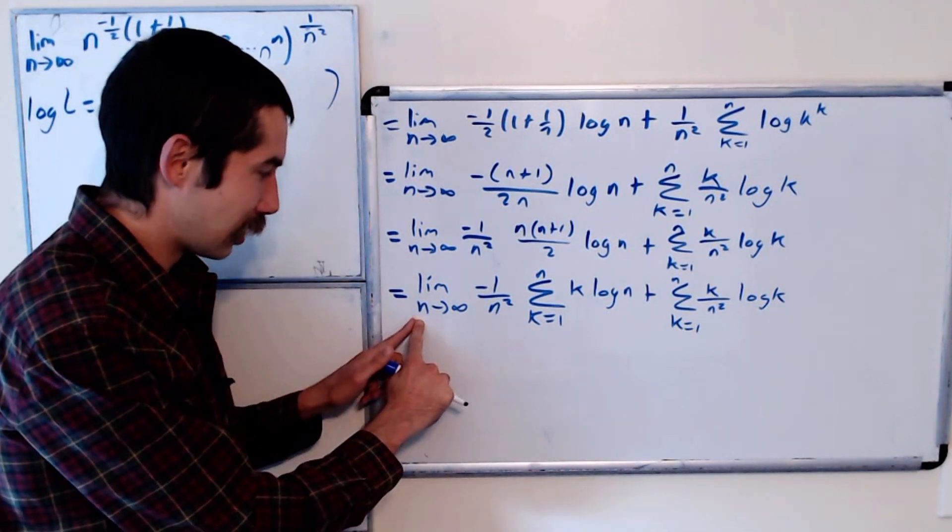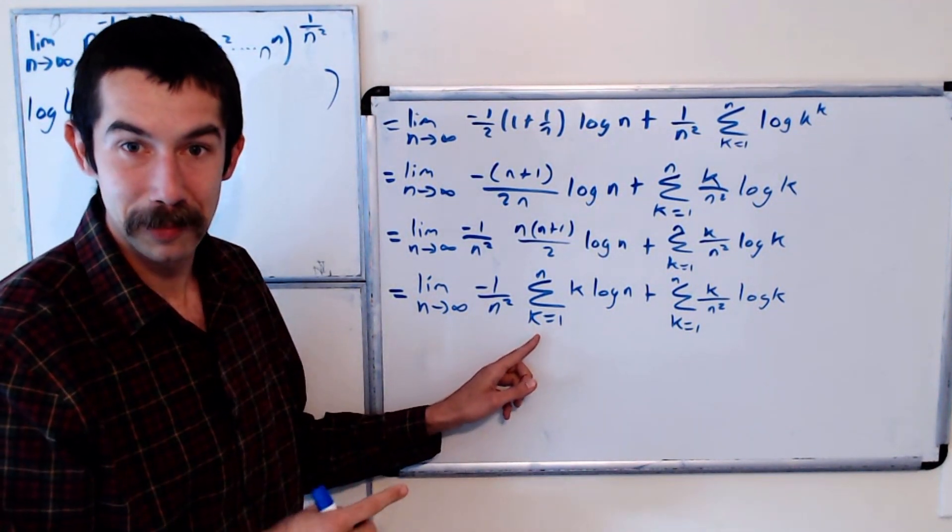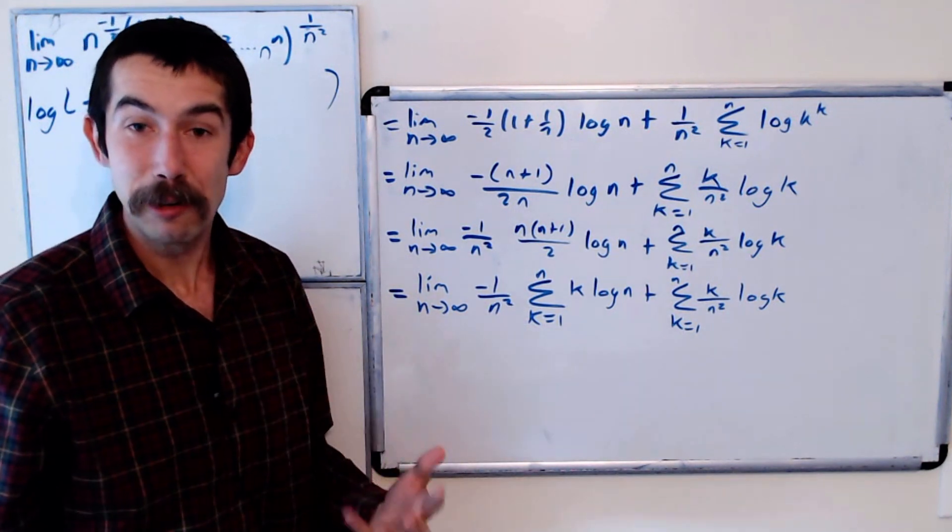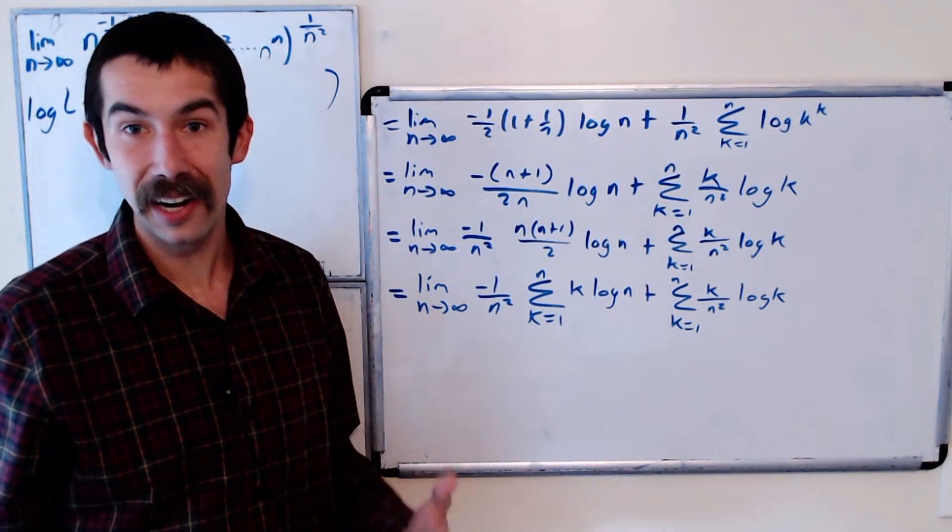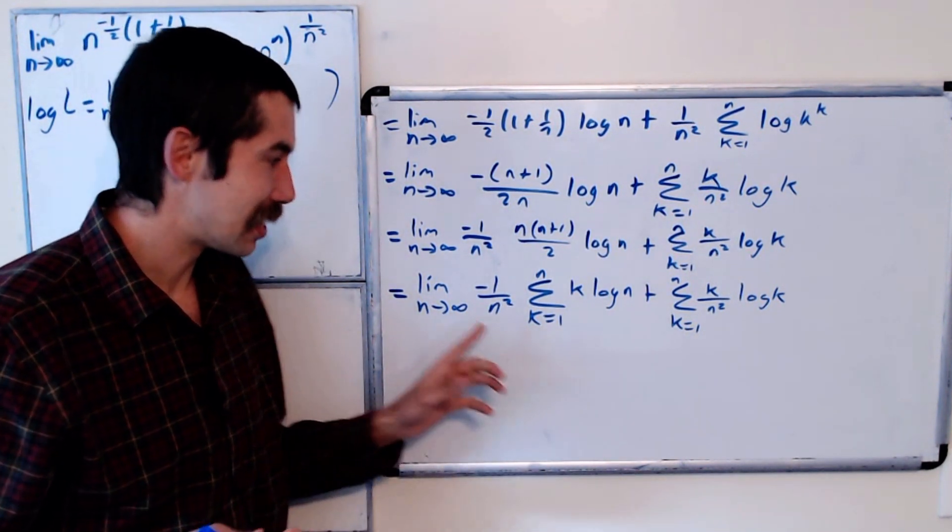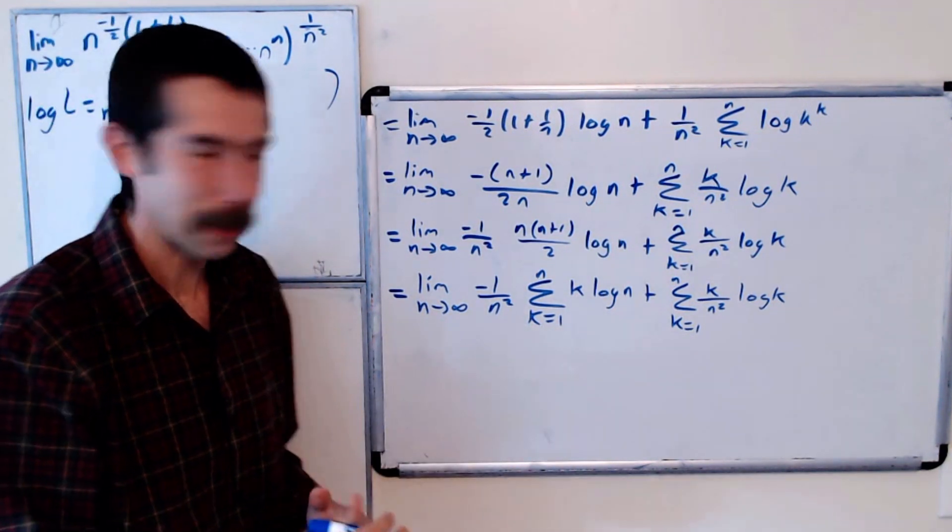And so whenever you have a limit as n goes to infinity of the sum from k equals 1 to n, you should be thinking this could be written as an integral. So let's write this as an integral. It's going to take us a couple of steps to get there though.